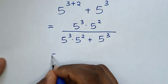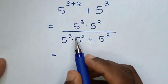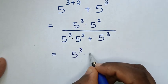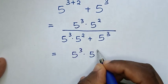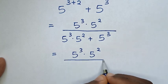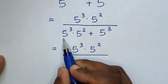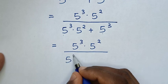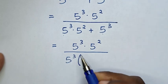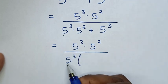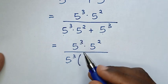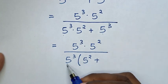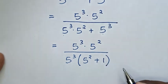Then it will be equal to 5 power of 3 times 5 power of 2, over — in the denominator 5 power of 3 is common. So we take 5 power of 3 out of the bracket. Then this divided by this is 5 power of 2, plus this divided by this is 1, in the bracket.